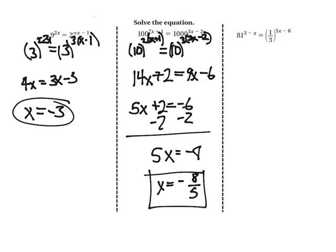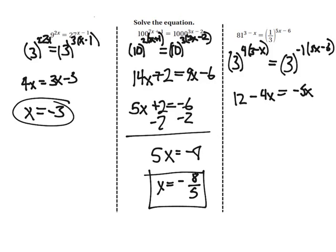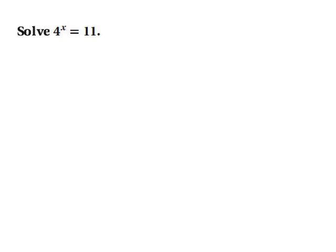On this one, it is 3 to the 4th power, and then that would be 3 to the negative 1. Distribute through and you end up with 12 minus 4x equals negative 5x plus 6. Add 5x over and you end up with x. Minus 12 over, you end up with negative 6.